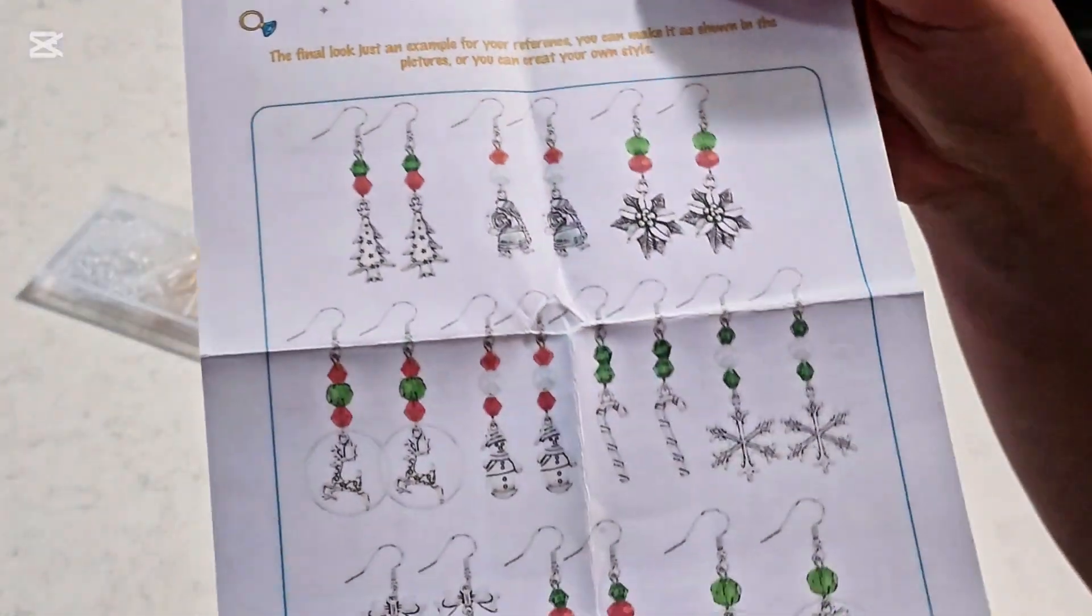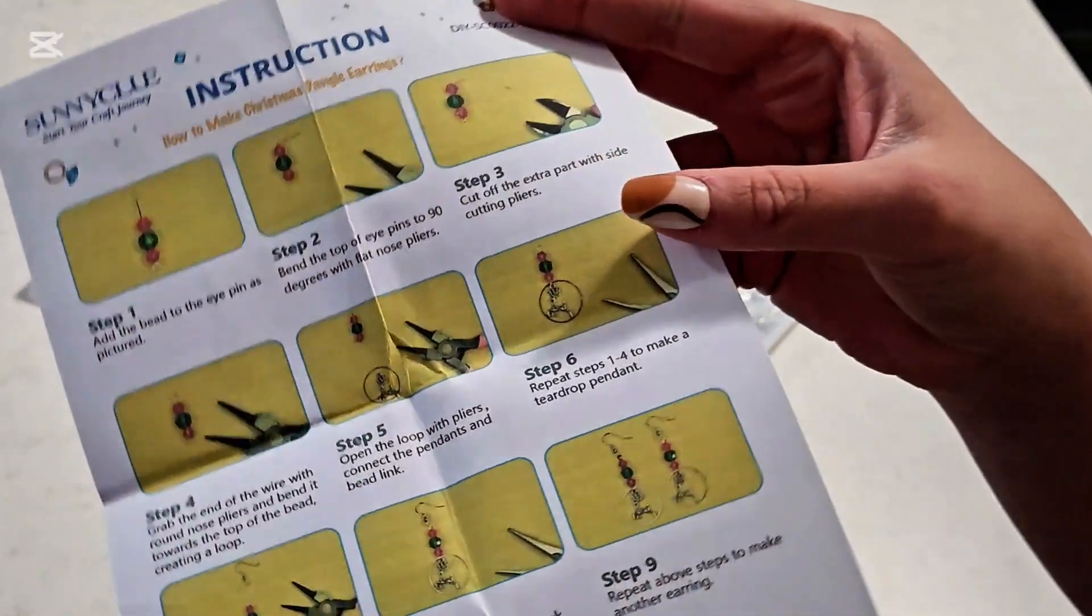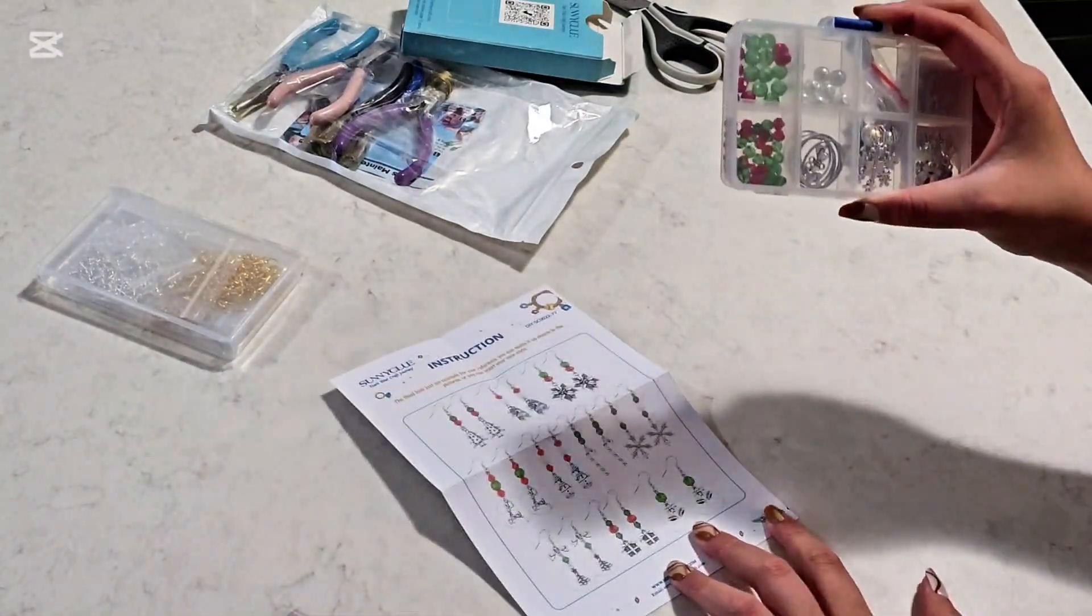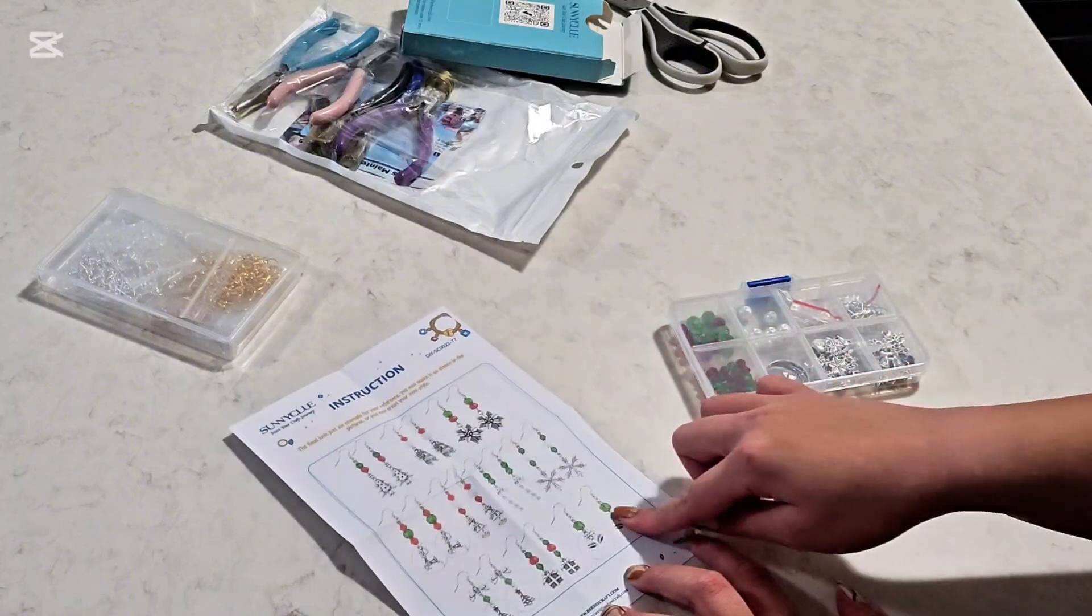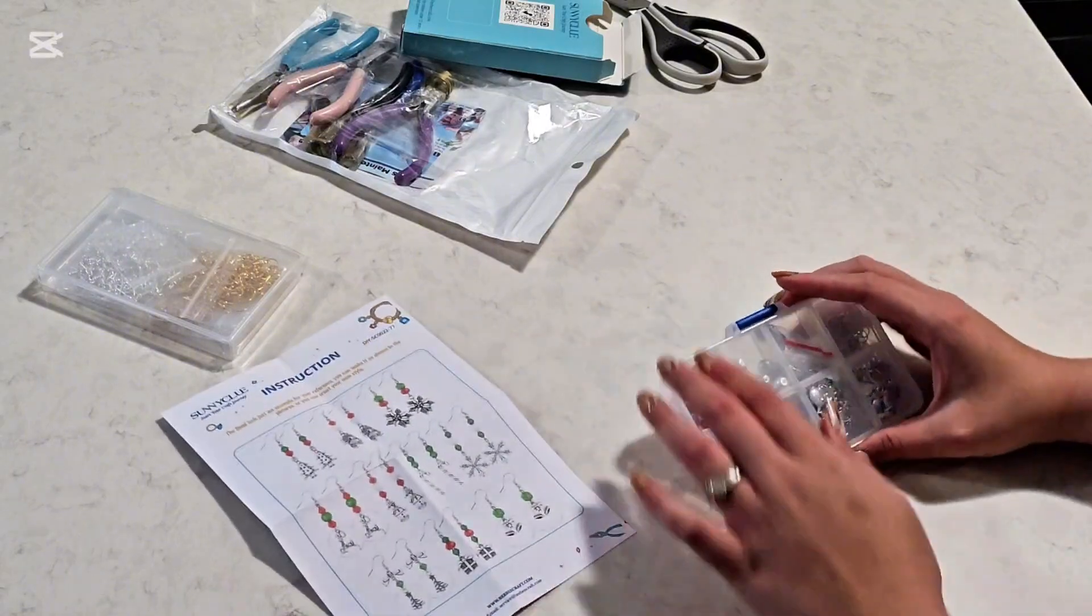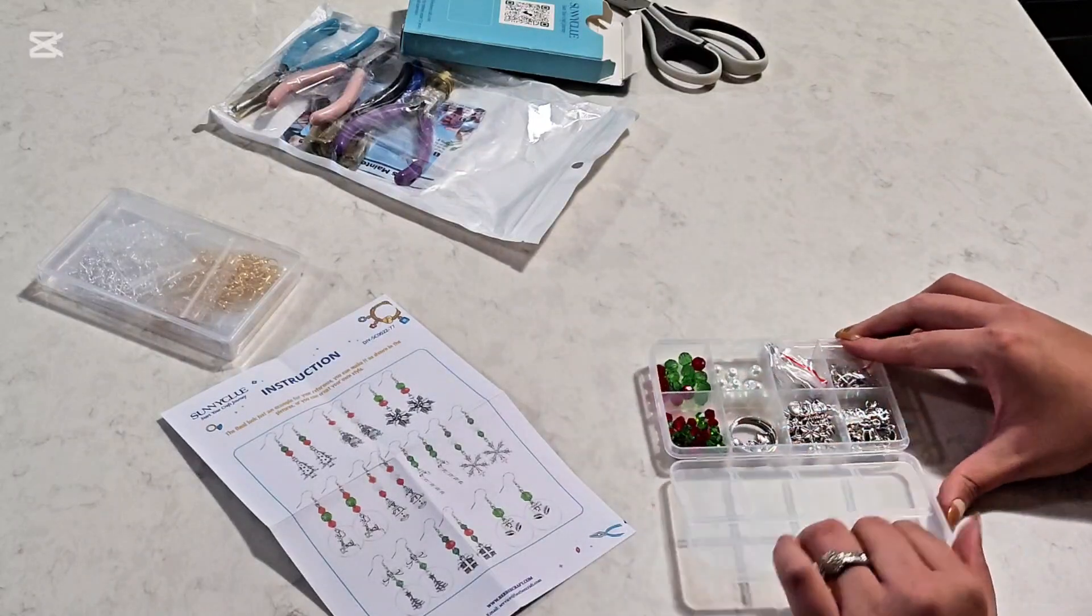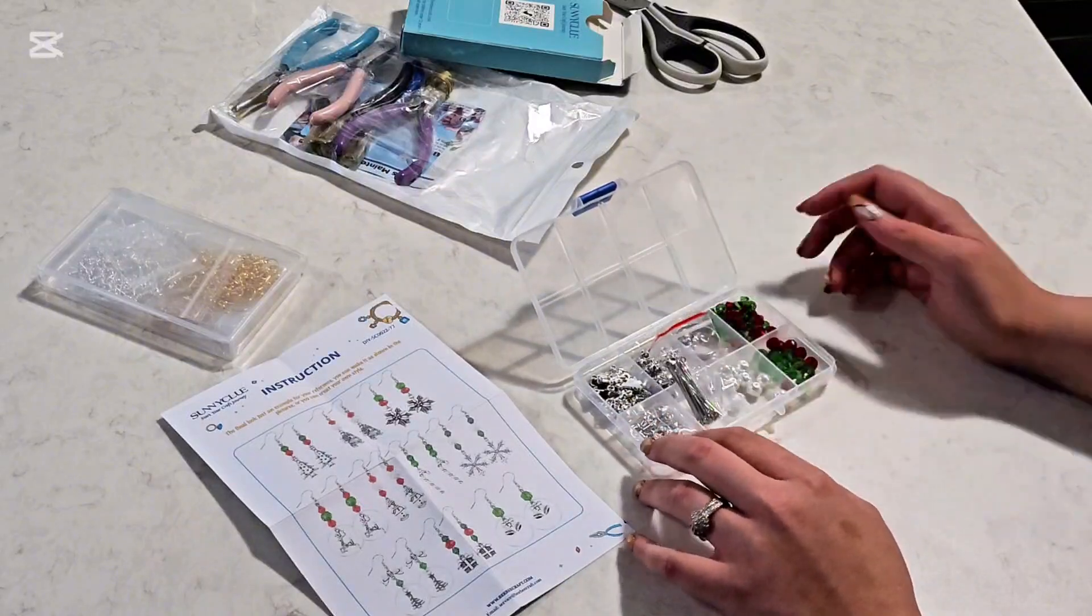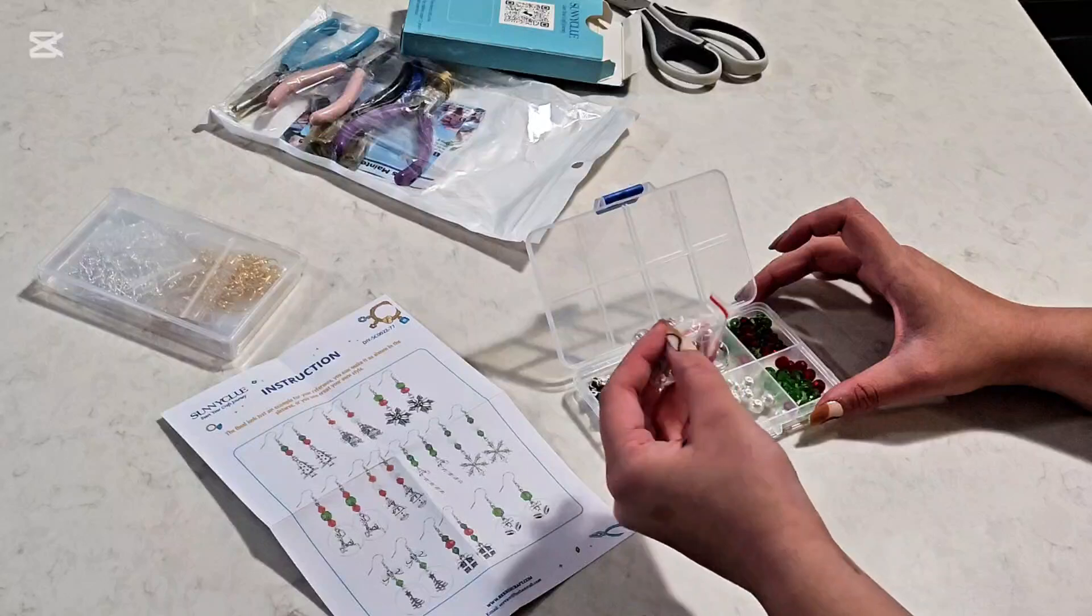So these are going to be the charms, sorry, the earrings that I'm going to be trying. And then on the back it gives instructions. And then these are the supplies. So it's supposed to make how many? Three? Well, it's supposed to make 12 pairs. Just these. Okay, let's see if that happens.